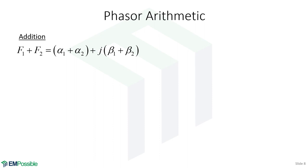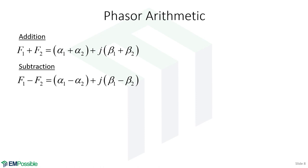Phasor arithmetic. For addition and subtraction, we use phasors in rectangular form. If we have two phasors, the real part of the sum is the sum of the real parts of the individual phasors, and the imaginary part of the sum is the sum of the imaginary parts of the original two phasors. Subtraction is almost the same: the real part of the difference is the difference of the real parts, and the imaginary part is the difference of the imaginary parts. That's pretty easy to do.